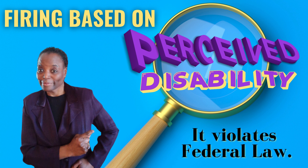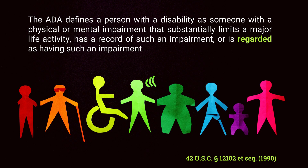Well, you want to hear this, so let's get started. The Americans with Disabilities Act defines a person with a disability as someone with a physical or mental impairment that substantially limits a major life activity, has a record of such an impairment, or is regarded — hone in on that word 'regarded' — as having such an impairment.